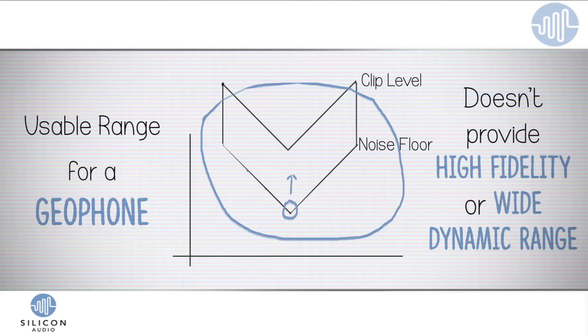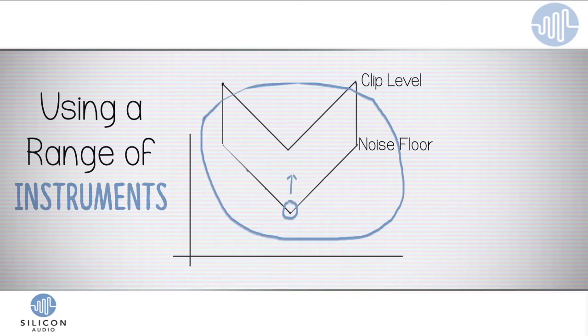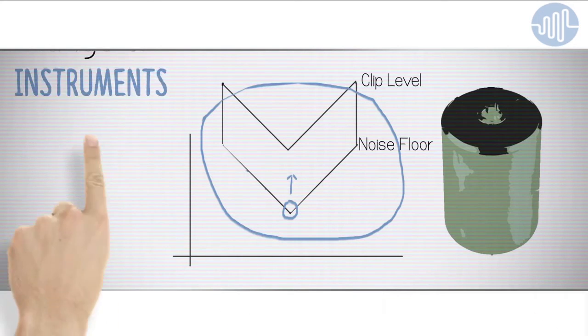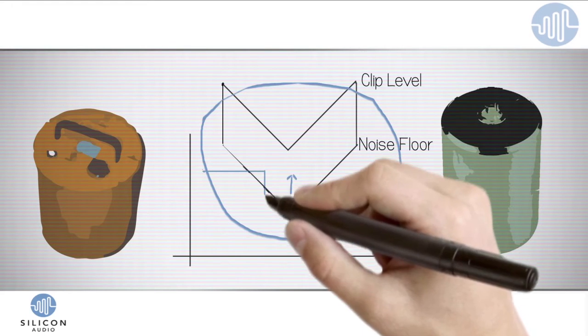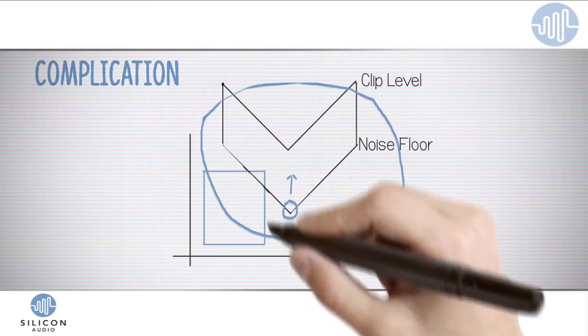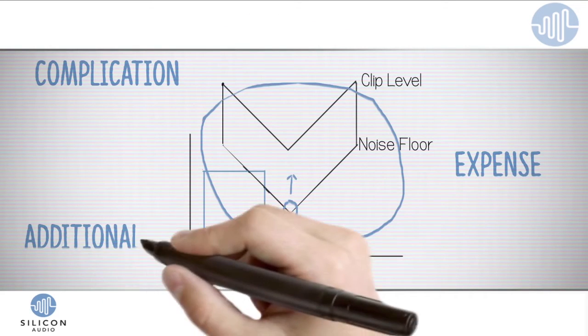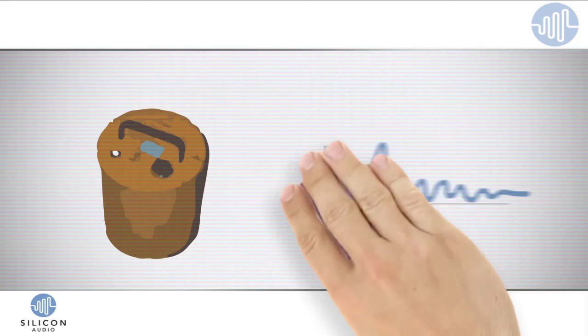In the past, field users would mitigate this limitation by simultaneously using a range of instruments, maybe a geophone plus a scientific instrument or multiple scientific-grade instruments to try and cover the entire intended range. But this adds complication, expense, and additional work. And scientific-grade instruments have their limitations, too.